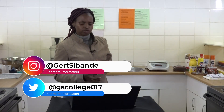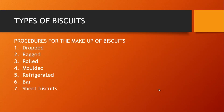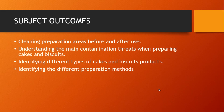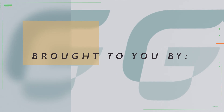The types of biscuits — there are seven procedures for the makeup of biscuits: dropped biscuits, bed biscuits, rolled biscuits, molded biscuits, refrigerated biscuits, bar biscuits, and sheet biscuits. From this lesson, we have covered: cleaning preparation areas before and after use, the main contamination threats, the different types of cakes and biscuits, and their preparation methods. For further questions, contact JS College on social media platforms or on Instagram at Incampus. Thank you very much.